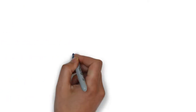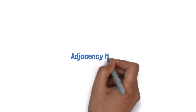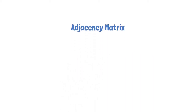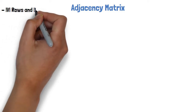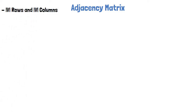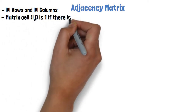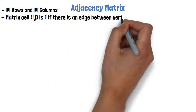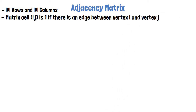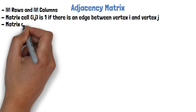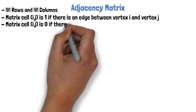The second common way to represent a graph is the adjacency matrix. In this representation we have a matrix where the number of rows and columns equals the number of vertices, such that each cell represents a possible edge between two vertices. If there is a 1 in the cell at row i and column j, it means there is an edge from vertex i to vertex j. If there is a 0, it means there is no edge.